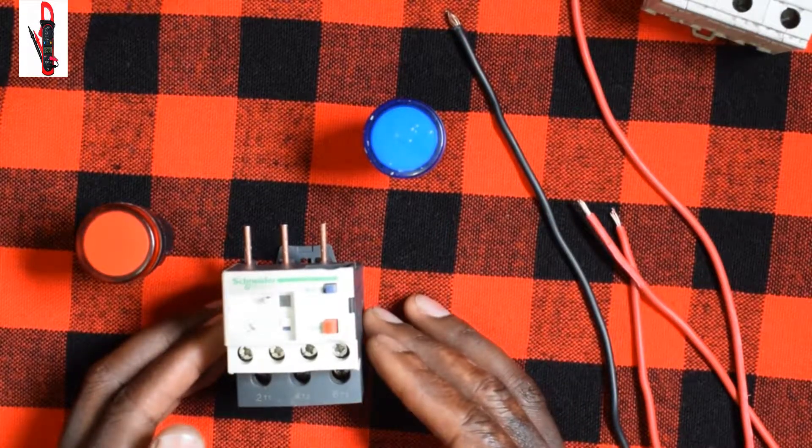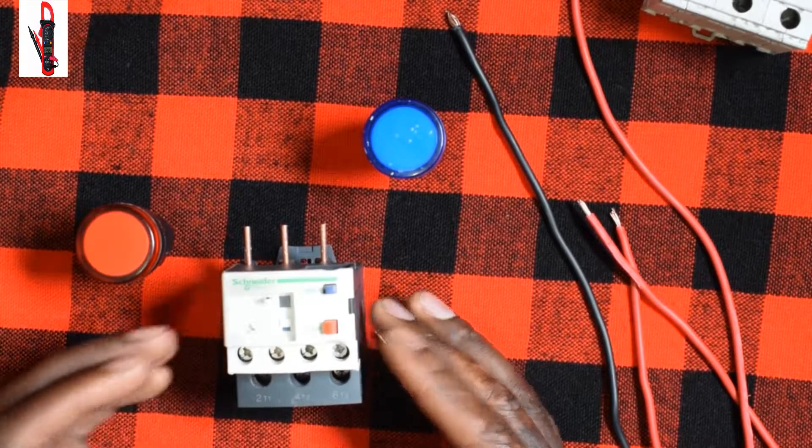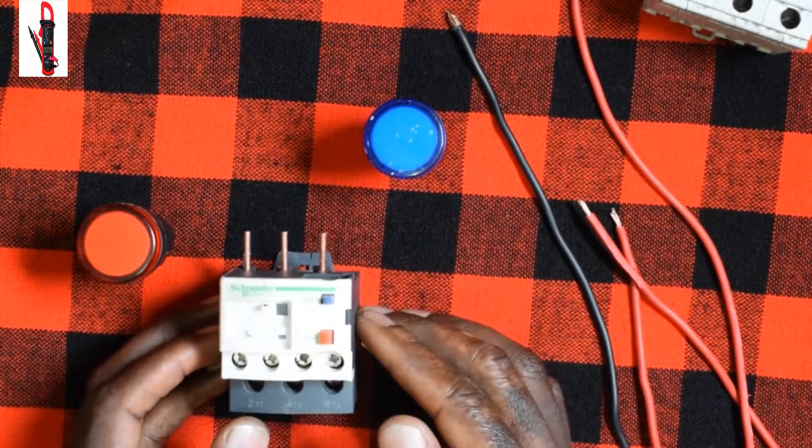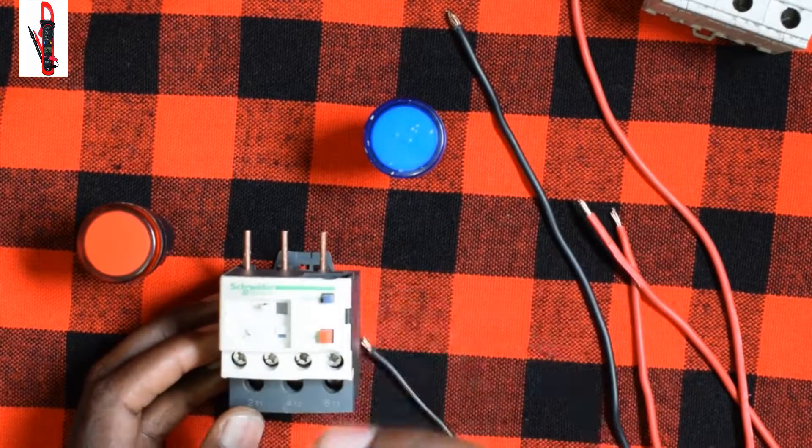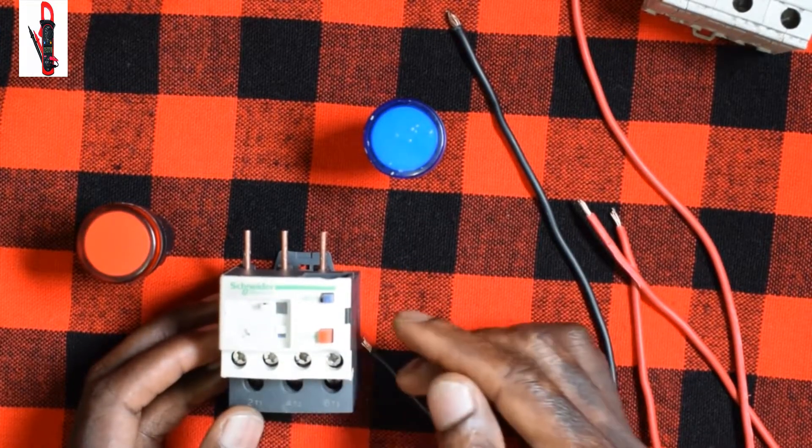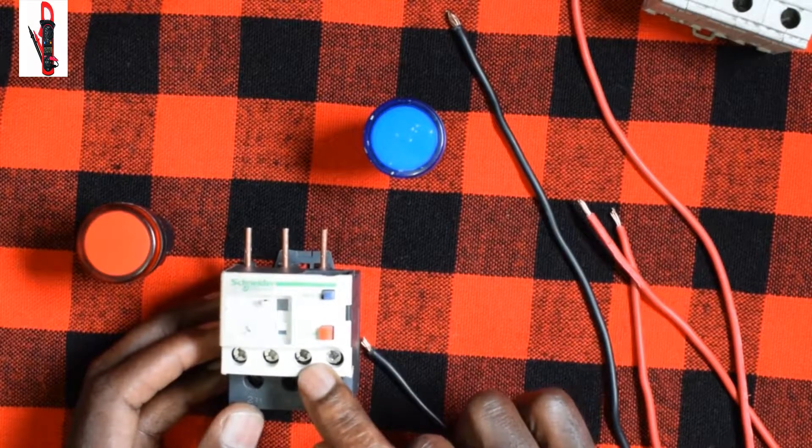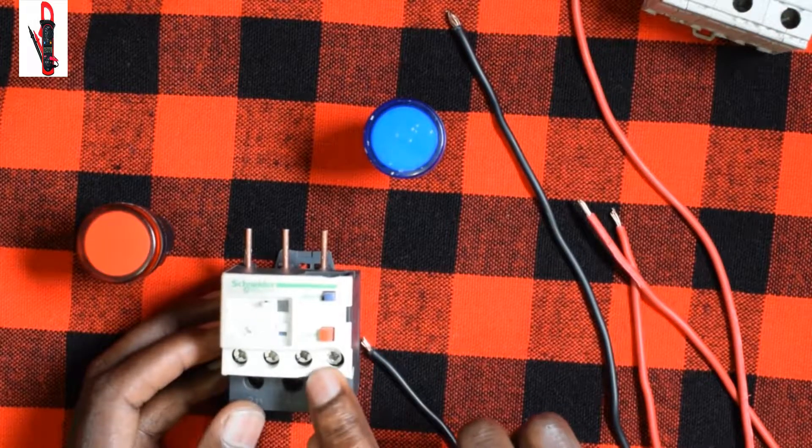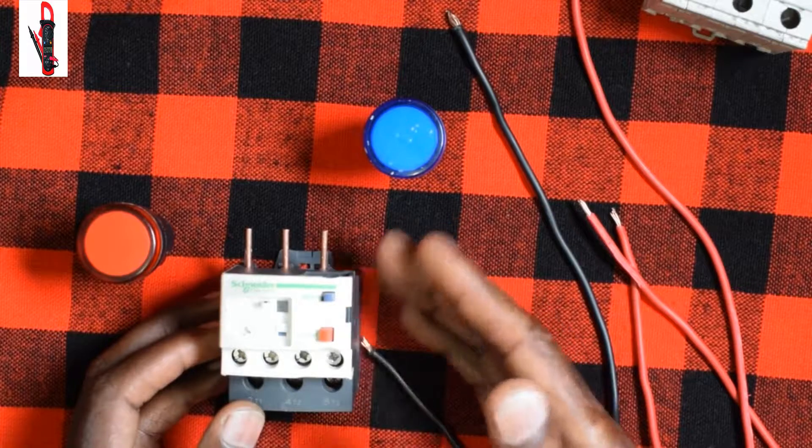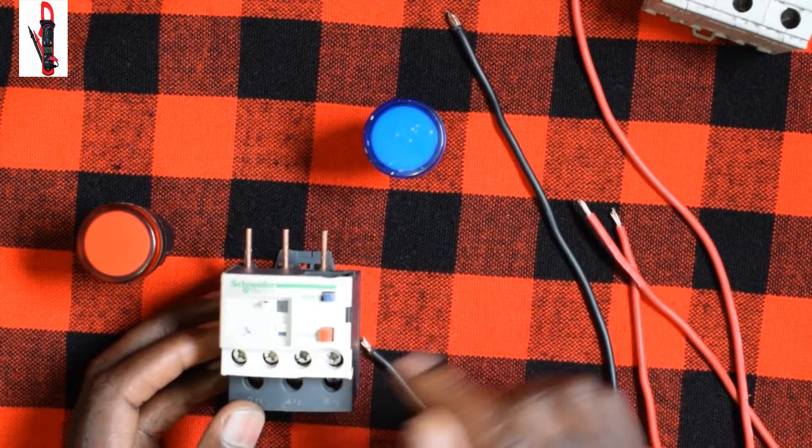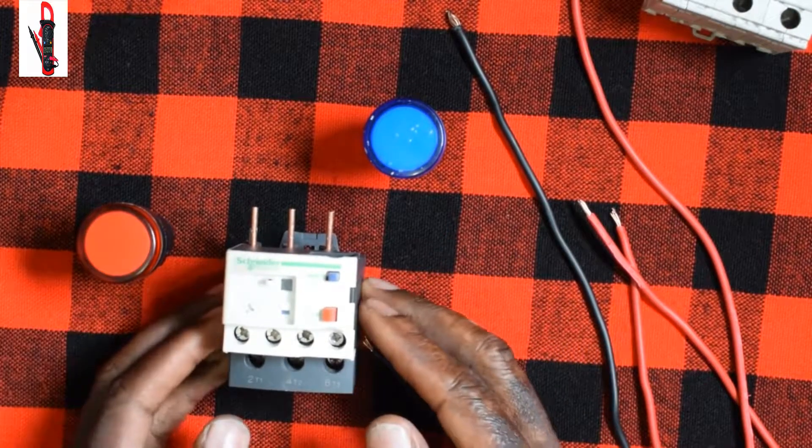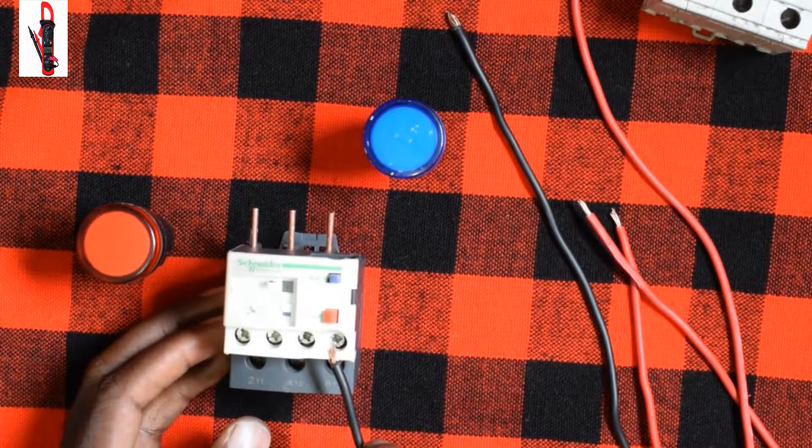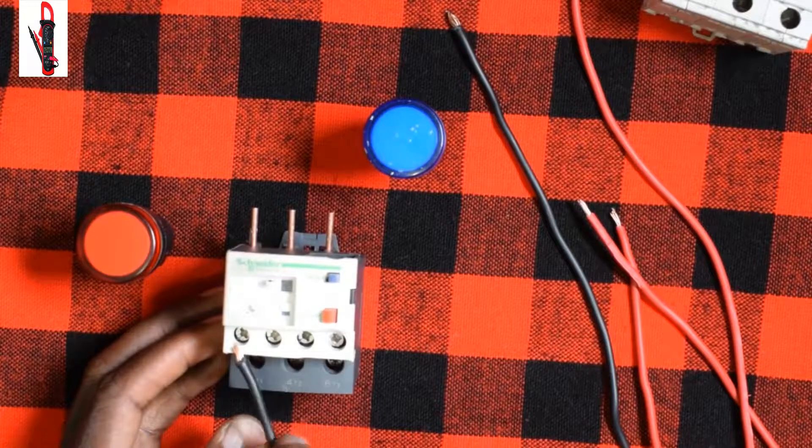If it draws more current than the overload can withstand, what happens is that before the motor burns, if it senses high current it will break. Remember, our control circuit has passed through the 96 and 95 which is normally closed. So the overload will sense that overload current and it will cut the circuit, or you can call it disconnect. It will disconnect the circuit, and that means that the part that is normally closed will now be the vice versa - the other side of normally open will close and this one will open.